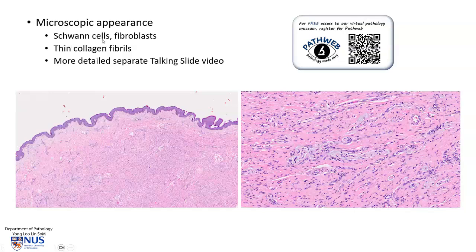Microscopically, these tumours are composed of Schwann cells as well as fibroblasts, and both of these cells look quite spindle-shaped. There are thin pink collagen fibrils in between. This is described in more detail in the separate talking slide video, which can be found in our virtual pathology museum in the skin chapter.